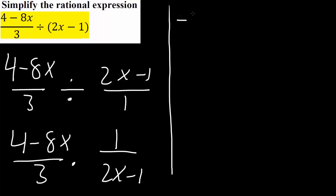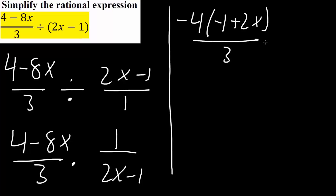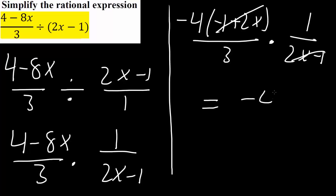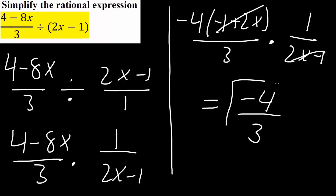If we factor out a negative 4, we get negative 4 times (negative 1 plus 2x) divided by 3, times 1 divided by 2x minus 1. We see that 2x minus 1 and 2x minus 1 match, so we can cancel them. Our final answer would be negative 4 divided by 3.